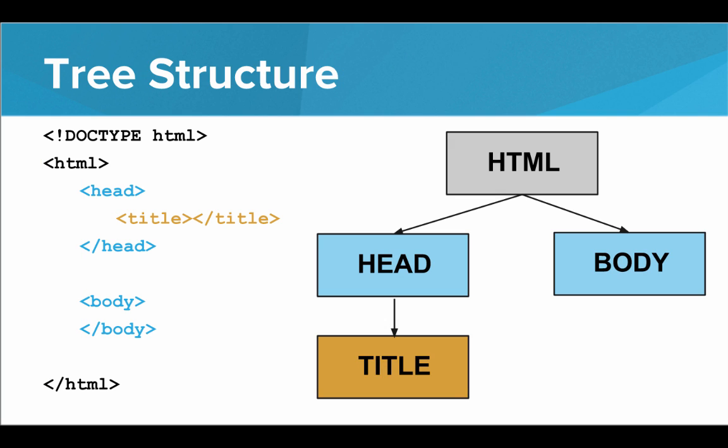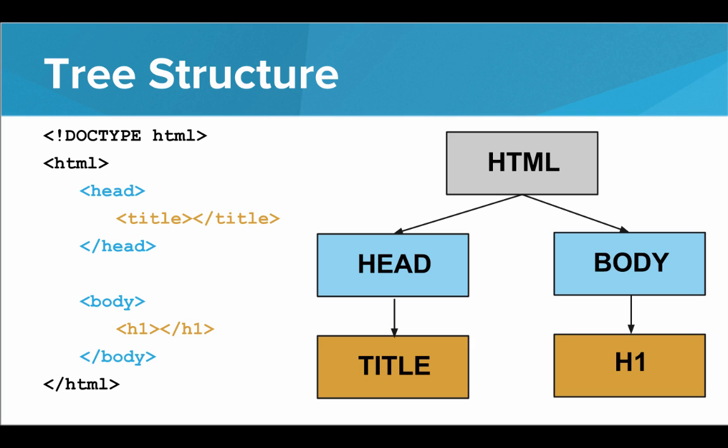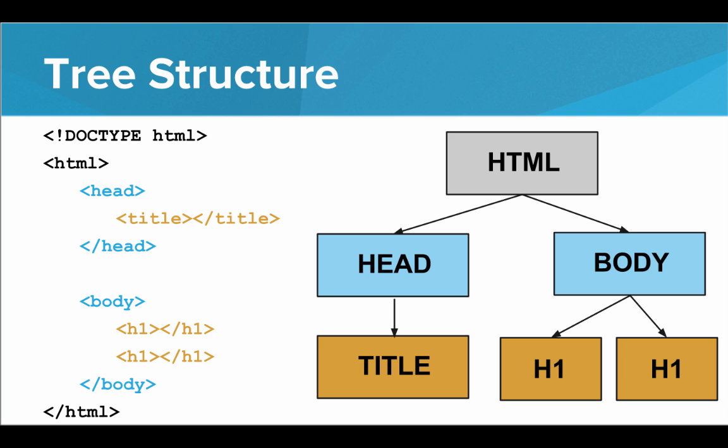We can see that with the layout of these tags, the HTML page is laid out like a tree. At the very root of the tree, we have the HTML tag. The HTML tag has two children — two tags inside of it: the head and the body. Inside head, we have the title of the page, so title goes beneath the head. If we were to add an h1 tag inside the body, the h1 tag would go below the body in the tree. If we added another h1 tag, they would both be on the same level. That's what we mean by the tree structure of the HTML document.